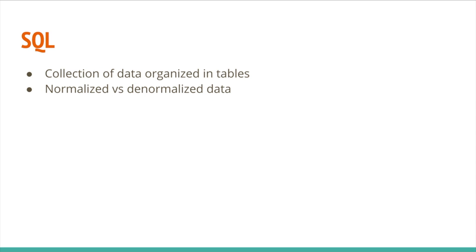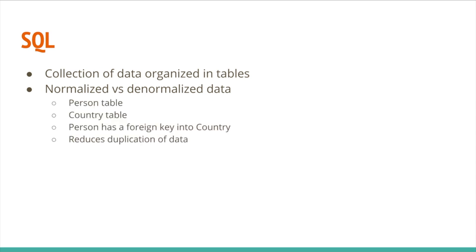SQL has this additional property versus NoSQL. For example, we might have a person table which stores information about the person — the name, the country they're from. We might also have a country table which has all the countries in the world. The person has a foreign key into the country table, and that is what we call normalized data. Instead of the person table having a country entry where each one is a string, we have an ID in that person table that points to a country row, reducing duplication of data.